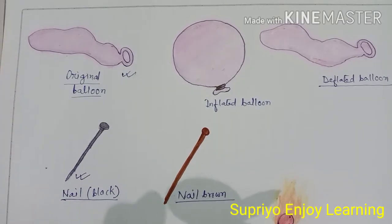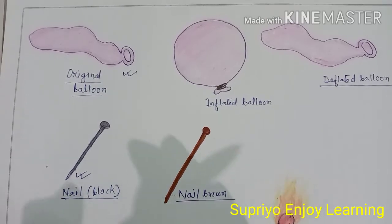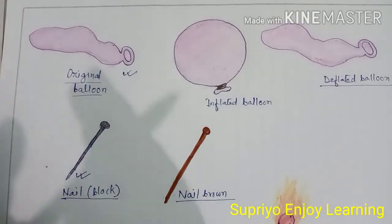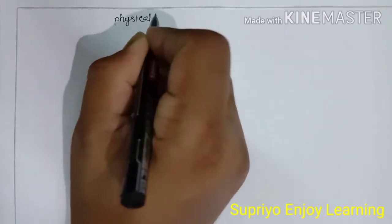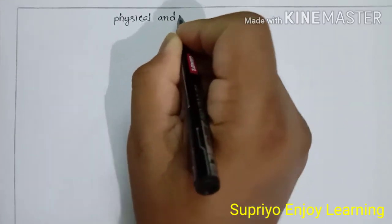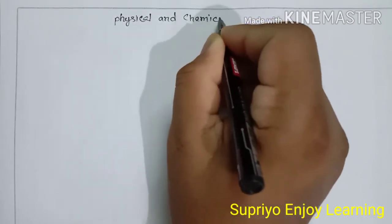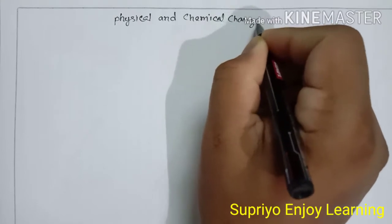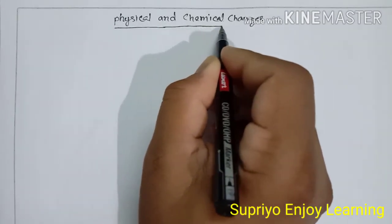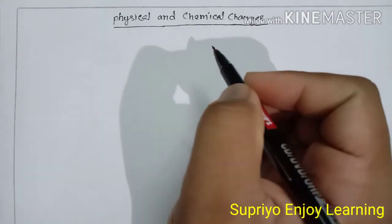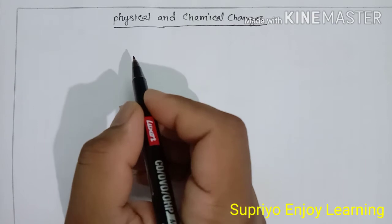So in this chapter we will discuss these changes broadly under two types: physical changes and chemical changes. All these changes are broadly classified into physical and chemical changes, and we will discuss all these changes under these two types.